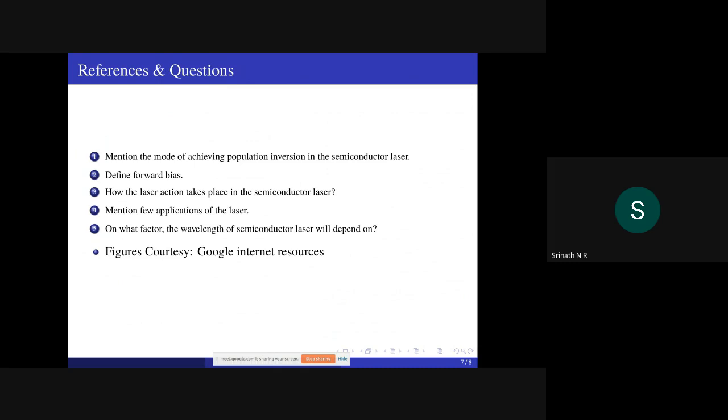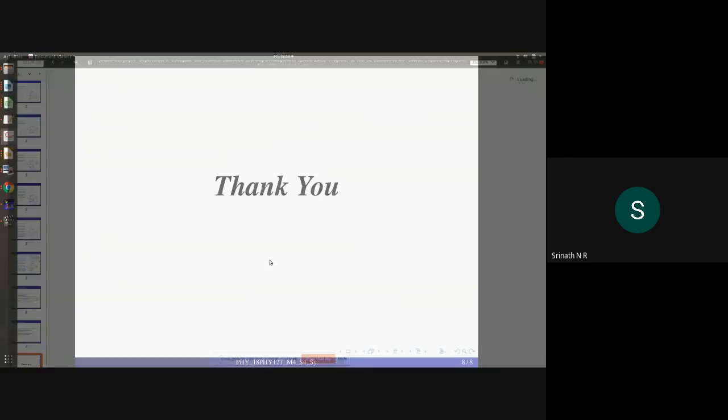Some possible questions: Mention the mode of achieving population inversion in semiconductor laser - that is forward bias. Define forward bias: positive side of semiconductor connected to positive terminal of battery and negative side connected to negative terminal. How does laser action take place in semiconductor laser? Mention few applications of the laser. On what factor does wavelength of semiconductor laser depend? Mainly energy gap and type of dopants. Figures courtesy: Google internet sources.